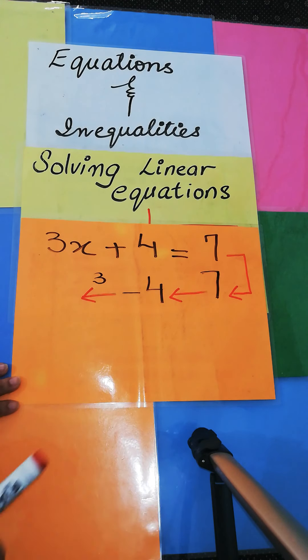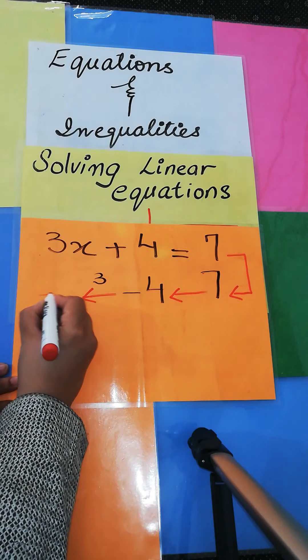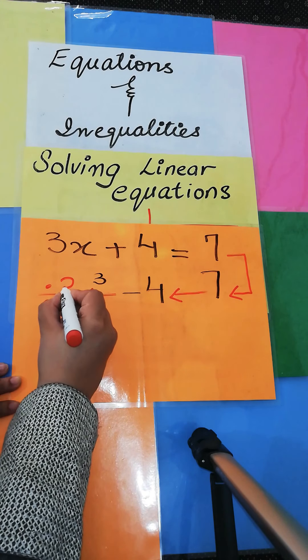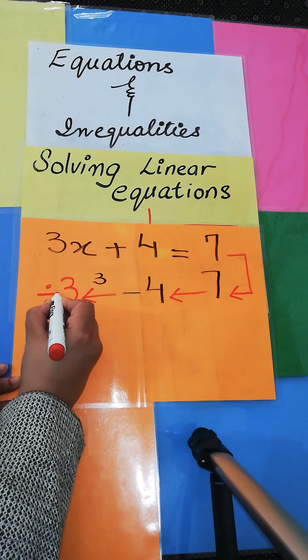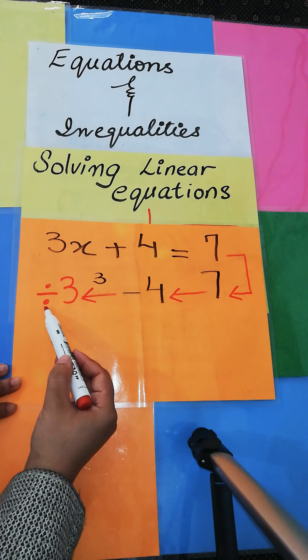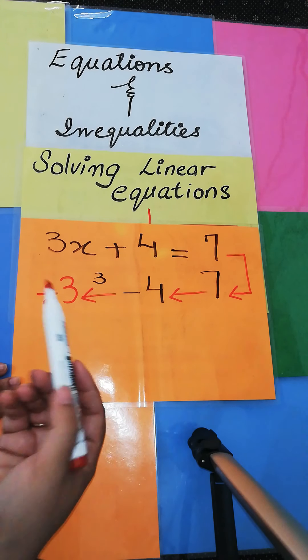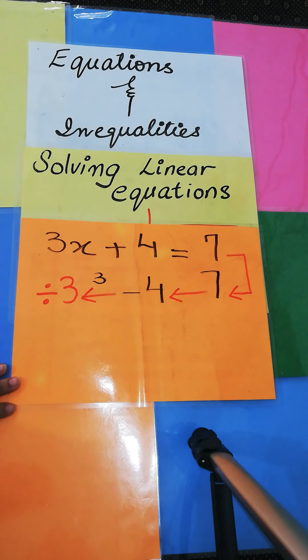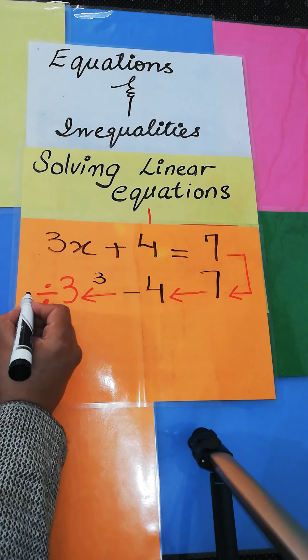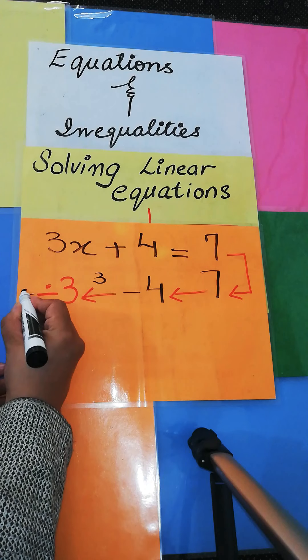So the inverse of multiplication is division. So I will write divide by 3 over here. The reciprocal, the inverse of multiplication is division. Divide by 3. So what is 3 divide by 3? 3 divide by 3 is 1.